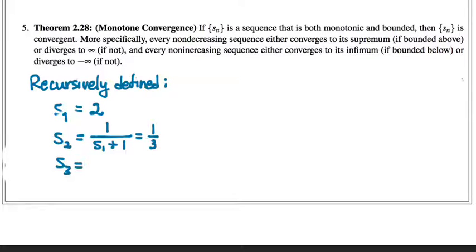And then I define the third term in the same way in terms of its previous term, 1 over S2 plus 1. So S2 plus 1, that would be 1 third plus 1, that would be 4 thirds downstairs, and so then this becomes 3 fourths.